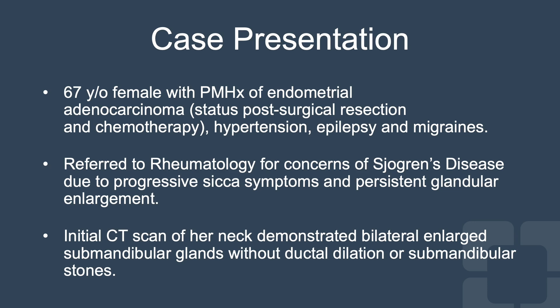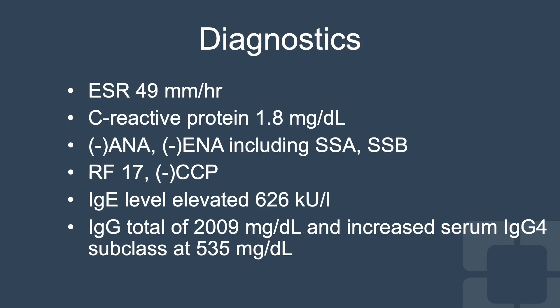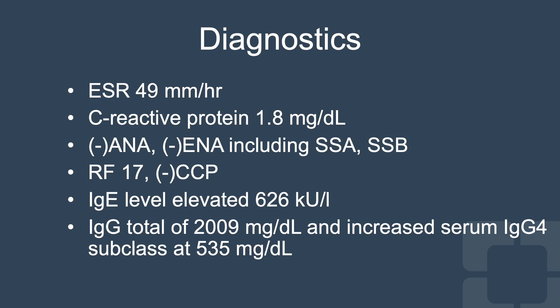Initial CT scan of her neck demonstrated bilateral enlarged submandibular glands without ductal dilation or submandibular stones. Labs revealed elevated markers of inflammation — ESR and C-reactive protein — with a negative ANA, ENA, including SSA and SSB antibodies. Her rheumatoid factor was borderline positive, CCP antibody was negative, and immunoglobulin E levels were found to be elevated. Additional laboratory testing yielded an elevated IgG and serum IgG4 subclass level.